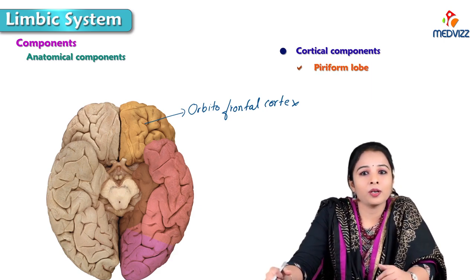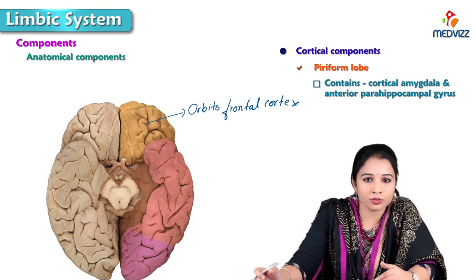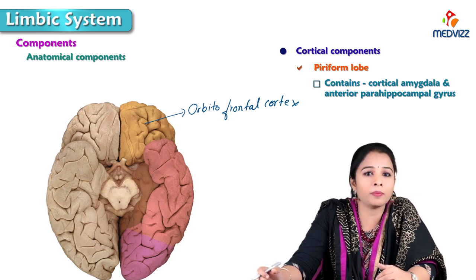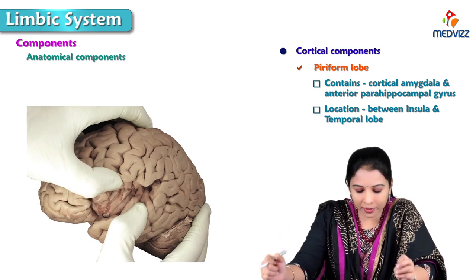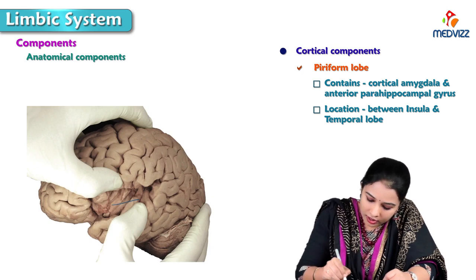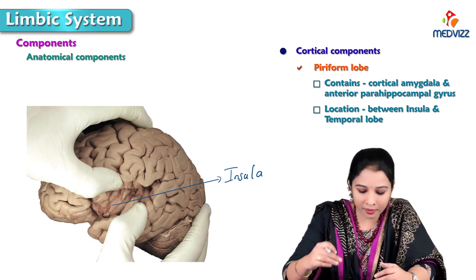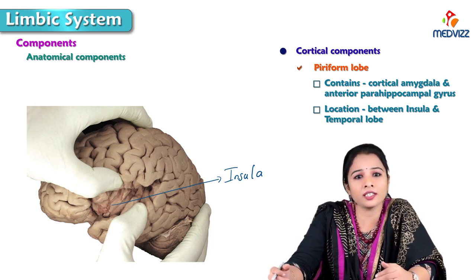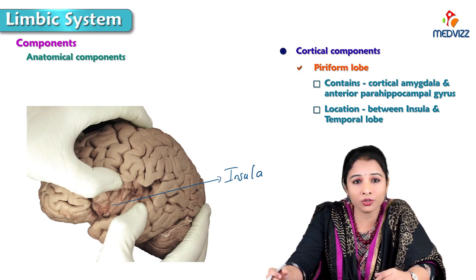The piriform lobe mainly consists of cortical amygdala and the anterior parahippocampal gyrus. The human piriform lobe is located between the insula and the temporal lobe. Here is a specimen where we separated the lips of the lateral sulcus to show the central lobe or insula. The piriform lobe is located between the insula and other cortical areas, and anteriorly and laterally to the amygdaloid body.